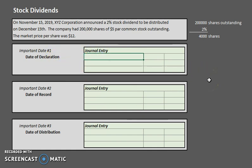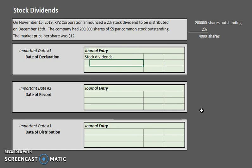On the date of declaration, we are obviously declaring a stock dividend. Stock dividends are contra capital accounts, so to recognize an increase we will debit stock dividends. When we did cash dividends, the credit was cash dividends payable. In this case it's similar, but instead of payable, we use a capital account called stock dividends distributable.